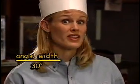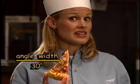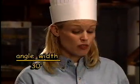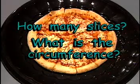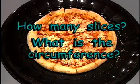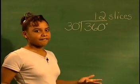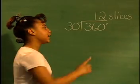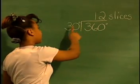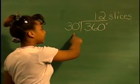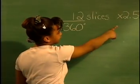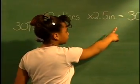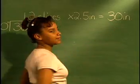What if the angle width of your pizza slice measures 30 degrees and the crust arc is two and a half inches? How many slices would there be in the original pizza and what is the circumference? 360 degrees divided by 30 degrees equals 12 slices. 12 slices times 2.5 inches equals a circumference of 30 inches.